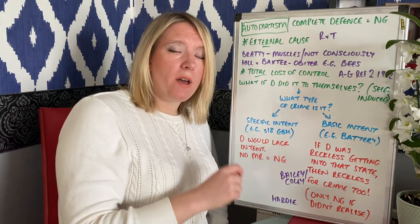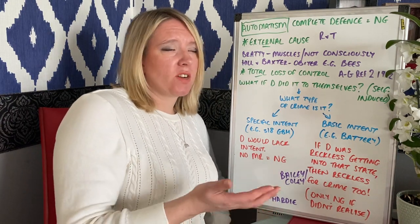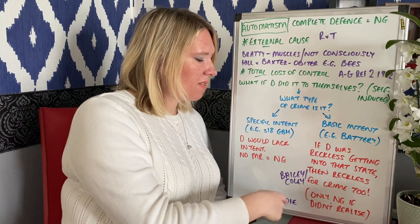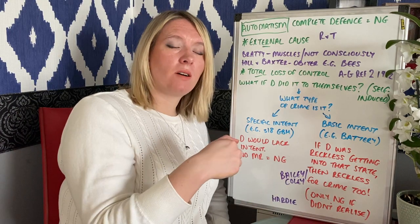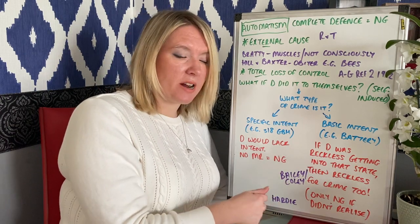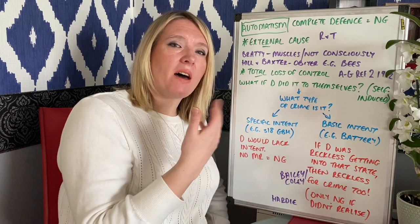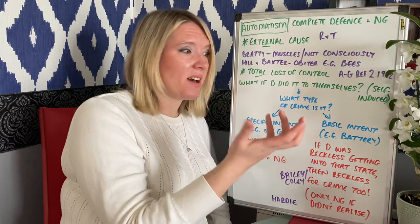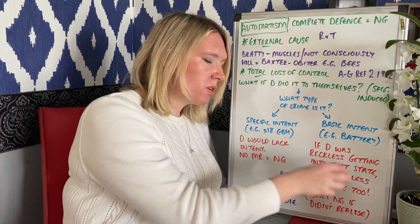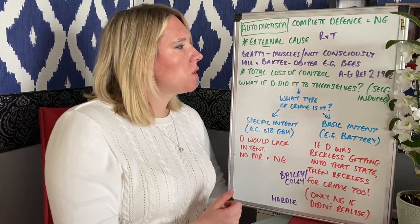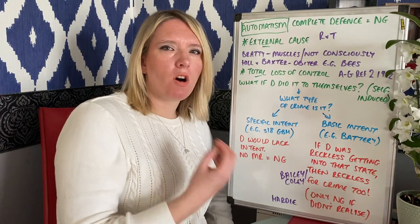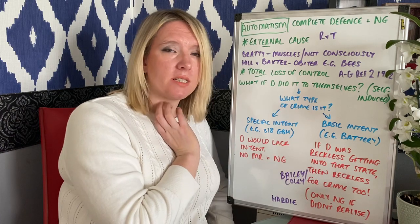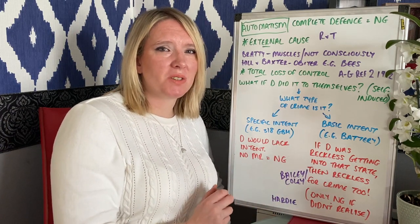The exception is if you don't realize the risk — for example, eating brownies someone has laced with drugs without your knowledge. In Hardy, he took antidepressants and didn't realize they could affect him that way; because he didn't realize the risk, he couldn't be reckless for entering that automatic state and therefore couldn't be reckless for the crime committed within it. I'll do a separate short summary video on intoxication, as those rules are very similar to self-induced automatism.